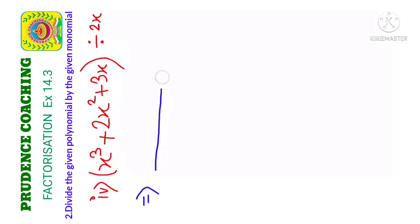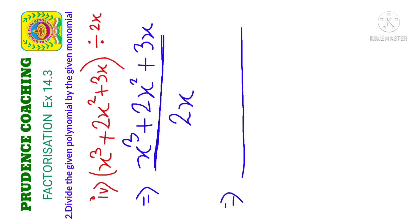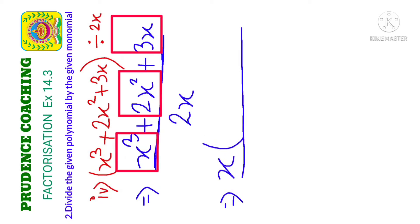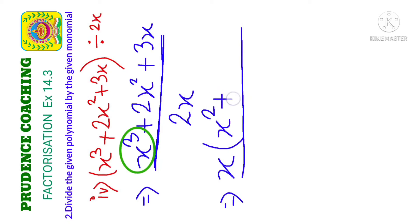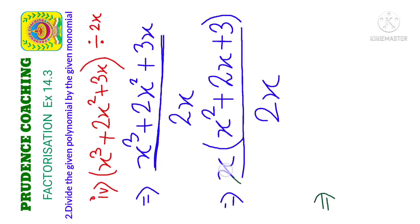Next sum: we divide the polynomial x³ plus 2x² plus 3x by the monomial 2x. In the numerator, x is common in all three terms. Taking x as common: x³ gives x², 2x² gives 2x, and 3x gives 3, so we have x(x² plus 2x plus 3). Dividing by 2x, the x in the numerator cancels with x in the denominator, leaving 1/2 as the constant. The final answer is (1/2)(x² plus 2x plus 3).